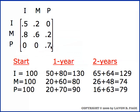Using this population dynamics matrix we can track what happens to the population over a period of time. Let's do a trial: suppose we start out with one hundred individuals in the immature group, one hundred in the mature group, and one hundred in the post-fertile group. What happens over the course of the year?